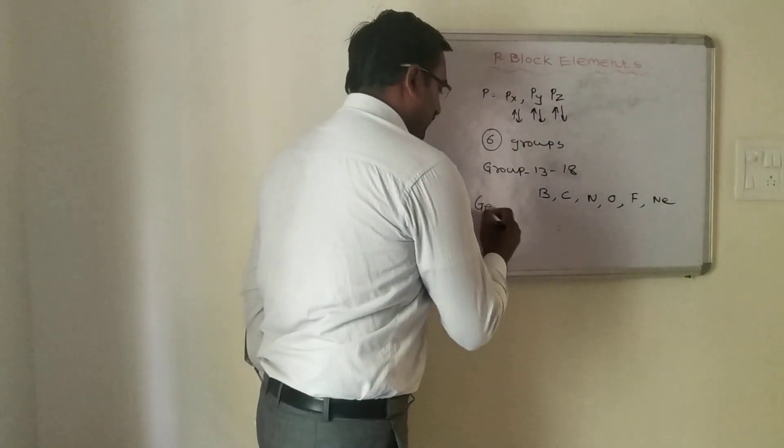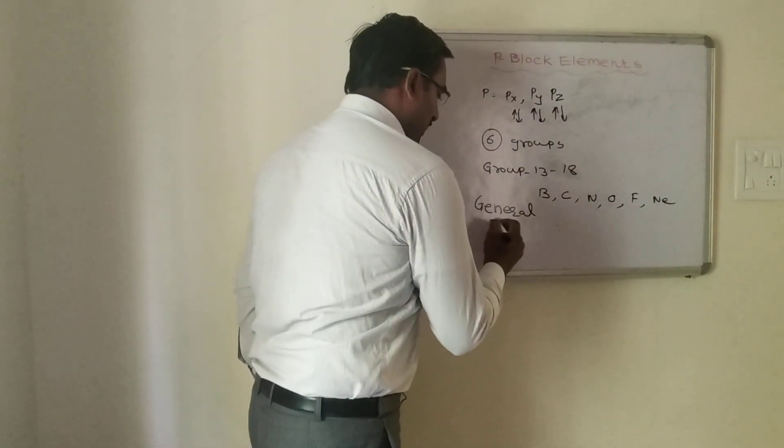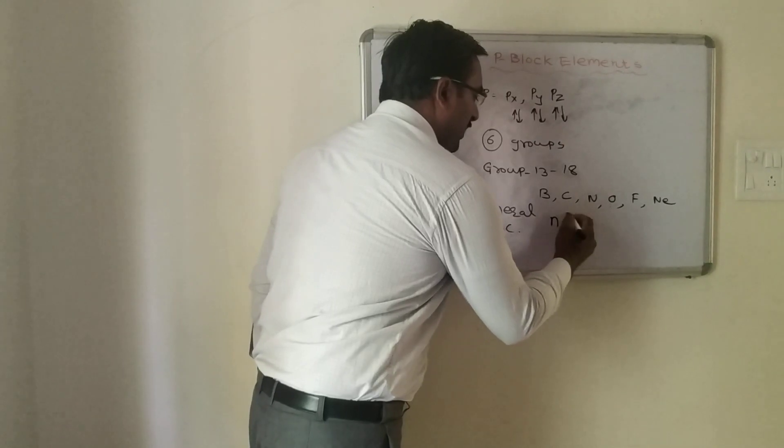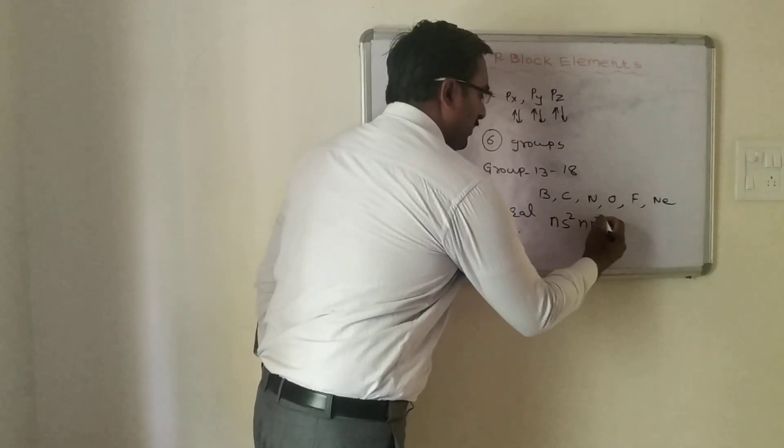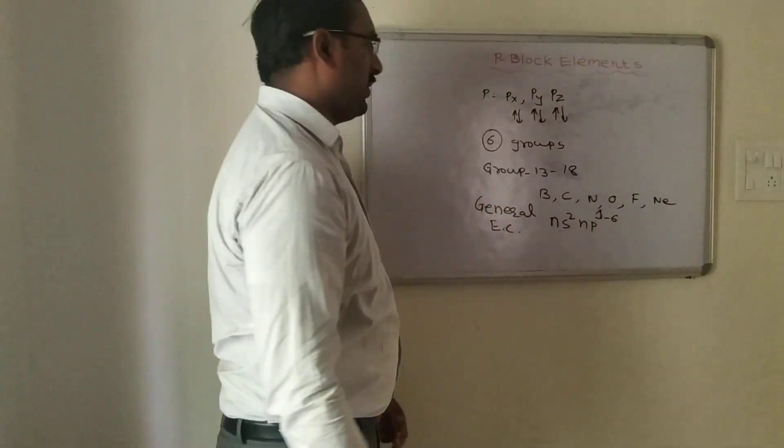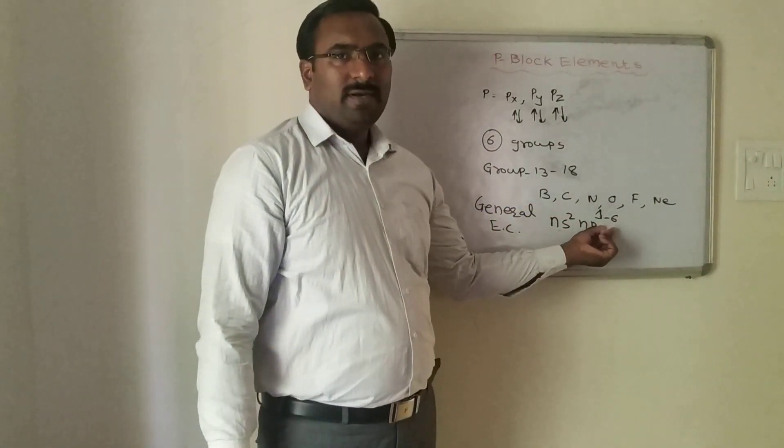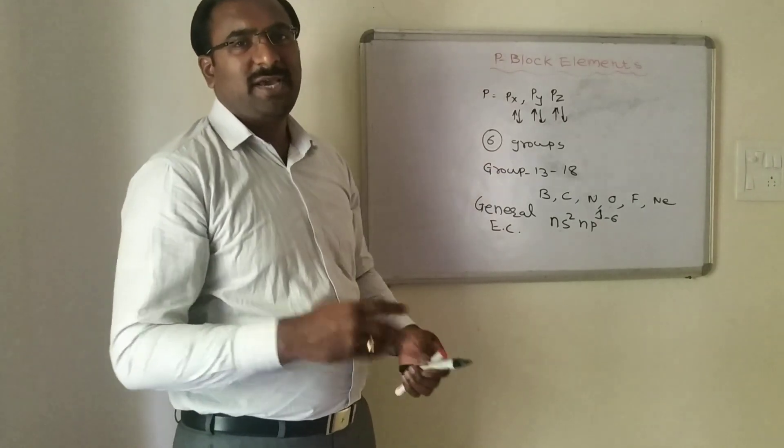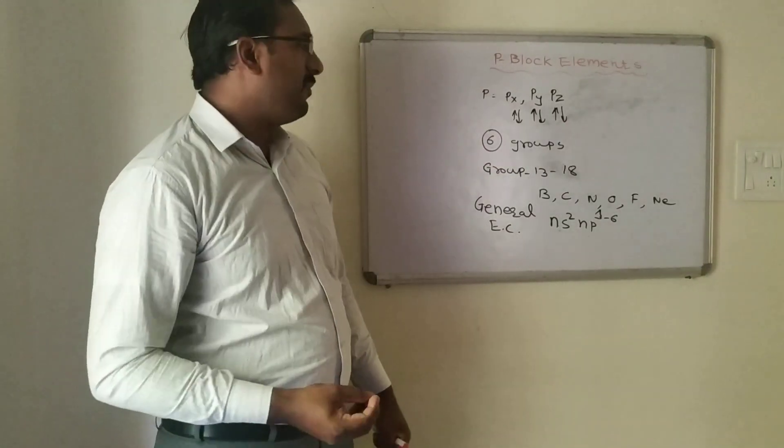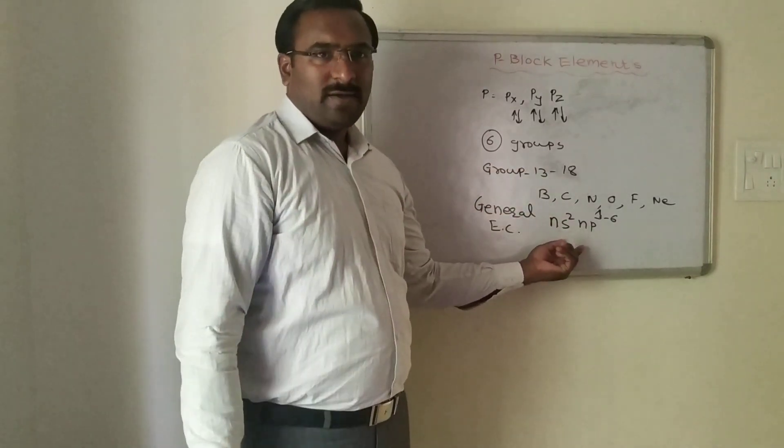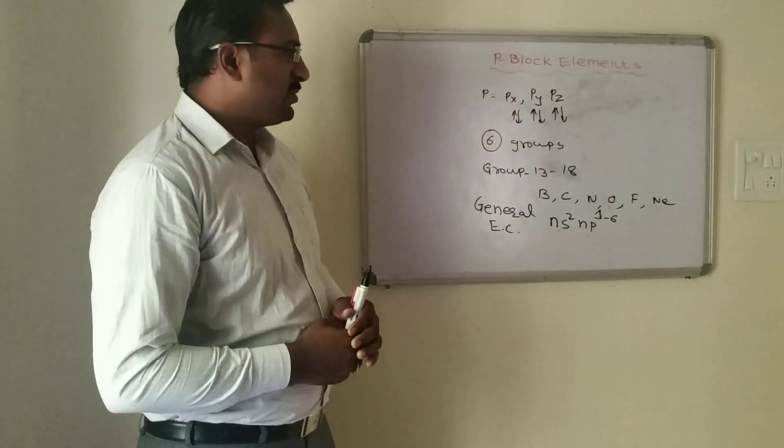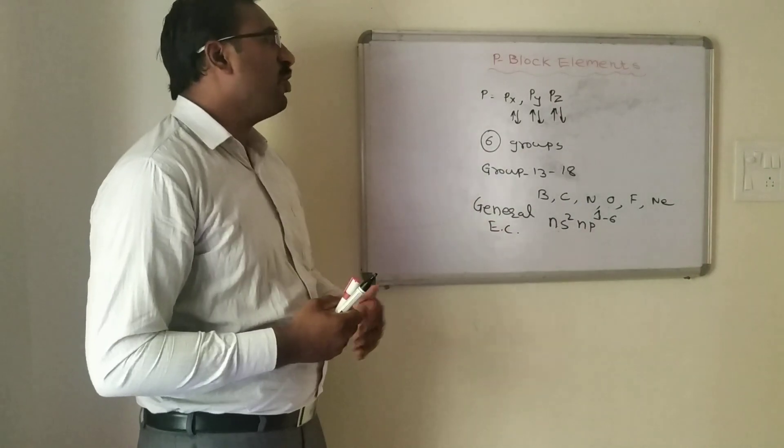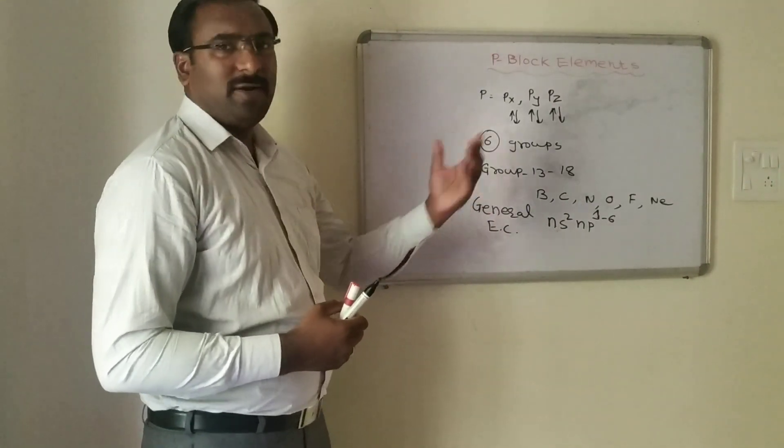The general electronic configuration for p-block is ns2 np1 to 6. This means the last valence electron is present in the p-orbital. The last electron enters in the p-orbital, hence all these groups are placed in the p-block. We will discuss some brief common properties and will discuss thoroughly one by one, group-wise, from group 13 to group 18.